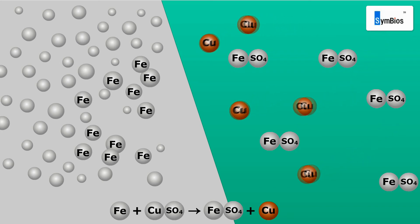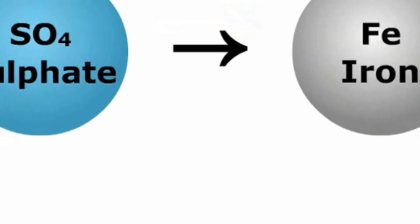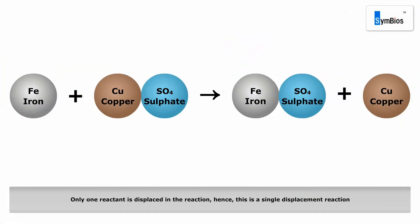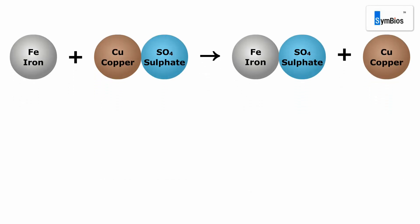The copper displaced from copper sulfate is set free as an element and gets precipitated as the brown deposits over the nail's surface. Thus, the reaction involves displacement of only one reactant, i.e. copper, from its compound. Compared to copper, iron is a more active metal.